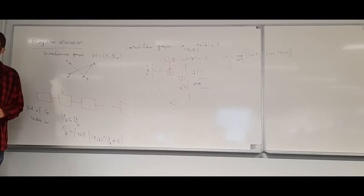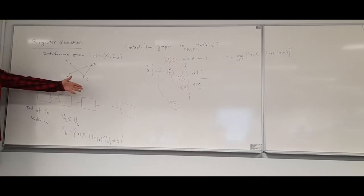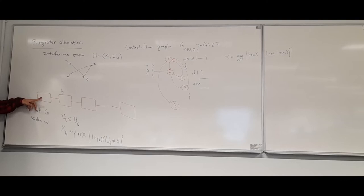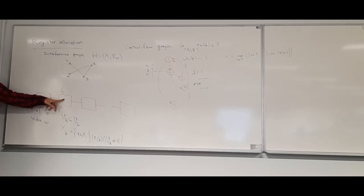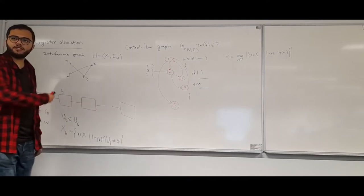Now I want to do a greedy coloring. Starting from this path decomposition, I go from left to right. Whenever I see a new variable that has not been colored, I give it the smallest possible color: when I see the first variable I color it 1, and every time I see a new variable I look at all of its neighbors and find the smallest color not used by any neighbor, and assign that color.